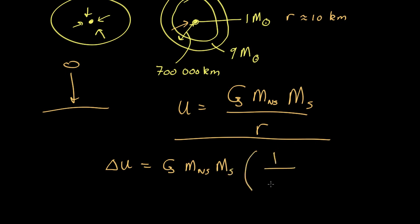1 over R of the neutron star, so 10 kilometers, minus the starting conditions, 1 over 700,000 kilometers. Now you can see this is going to be vastly smaller than that, so we can actually just neglect that.